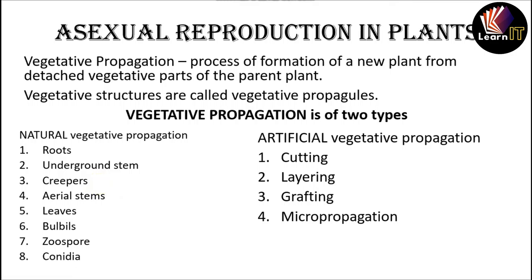In artificial vegetative propagation, the first method is cutting — a small piece of a plant organ such as a stem, root, or leaf is used for propagation. The second method is layering, in which roots are artificially induced on branches of a stem before they are detached from the parent plant. The third method is grafting, in which parts of two plants are joined in such a way that they grow as one plant.